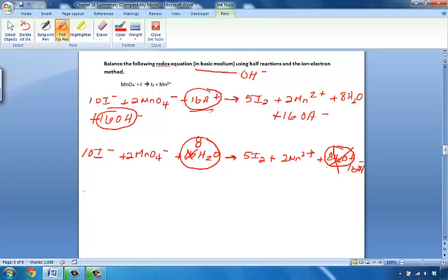Let's rewrite once again. 10I⁻s, 2MnO₄⁻. 8 waters left. That's what makes it an aqueous solution.